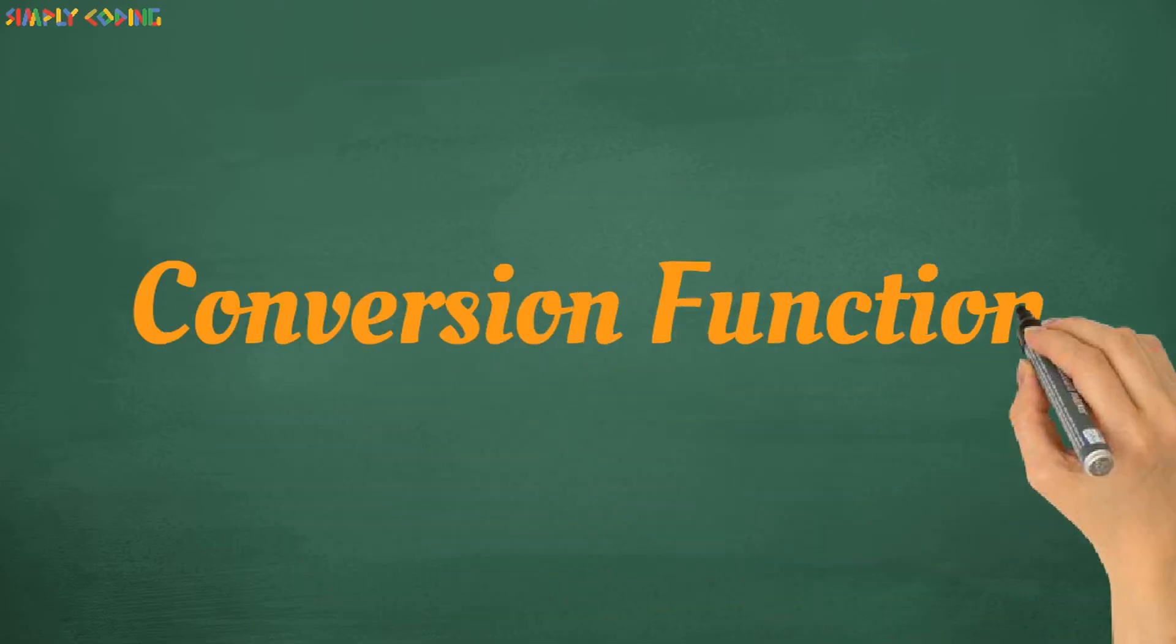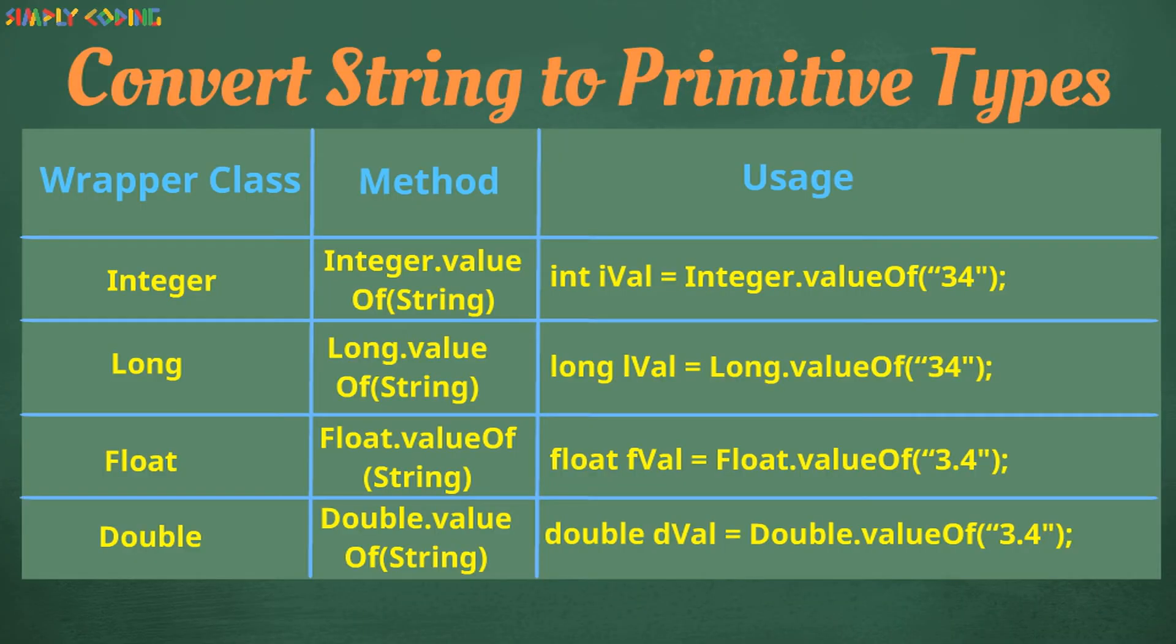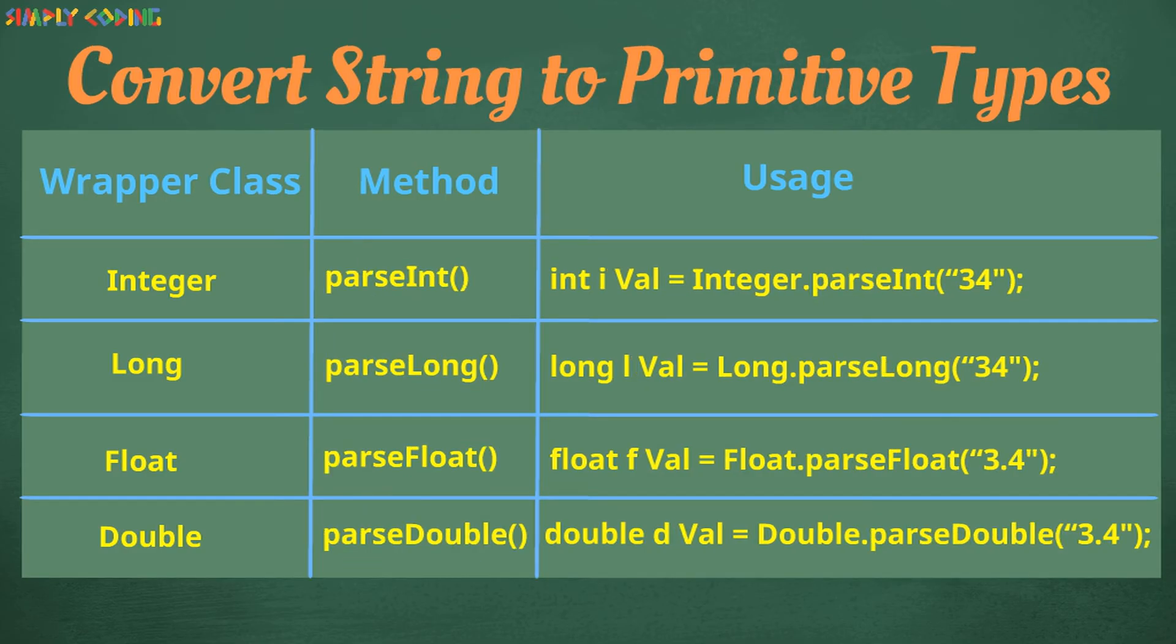We will now look at conversion functions and how we can convert strings to various primitive types. All wrapper classes such as Integer, Float, etc., come with a valueOf function which can be used to convert string to primitive types. They also have a parse function, which is now not recommended, but can also be used to convert string to primitive type.